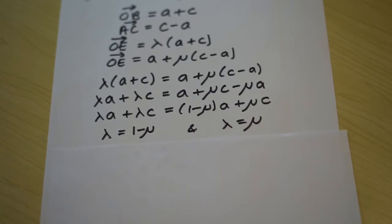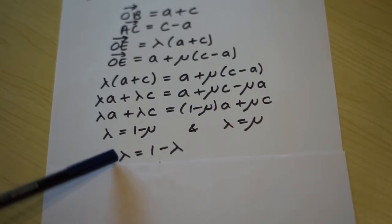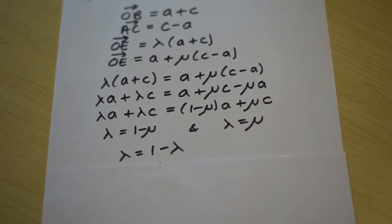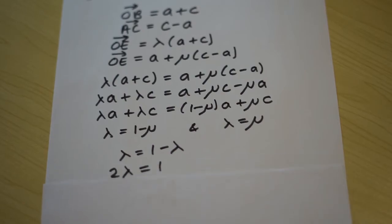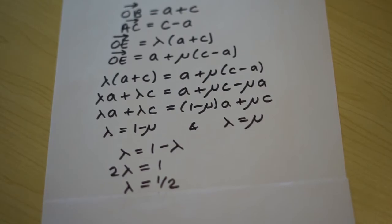Our next step is to treat these two as simultaneous equations. So substituting the second equation into the first, we get that lambda equals 1 minus lambda. Therefore 2 lambda equals 1, and lambda therefore equals a half.